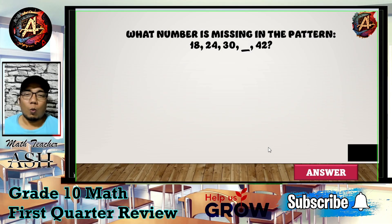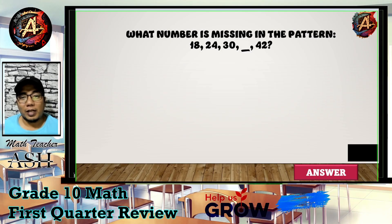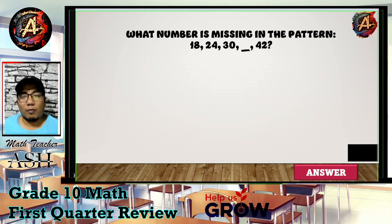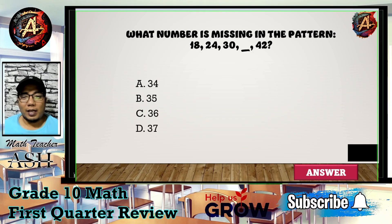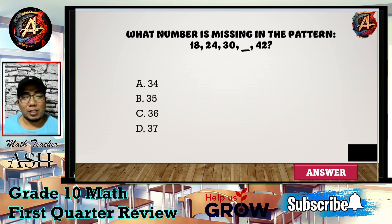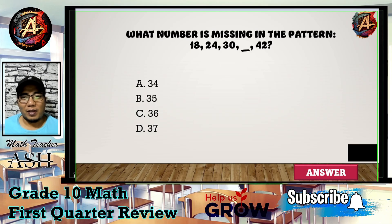Question number four: What number is missing in the pattern 18, 24, 30, ___, 42? Is it A) 34, B) 35, C) 36, or D) 37? I'll give you five seconds to think about your answer.